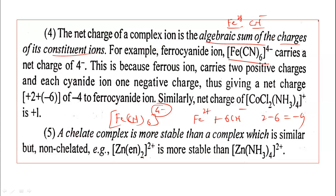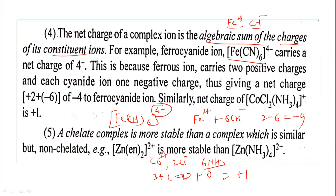Another example: [CoCl2(NH3)4]+. The constituents are Co3+ (+3), 2 Cl− (−2), and 4 ammonia molecules (neutral, zero charge). So the net charge is 3 − 2 + 0 = +1. Therefore the complex ion carries a +1 charge. This is how we calculate the charge on a complex ion — the algebraic sum of charges of all constituent parts.